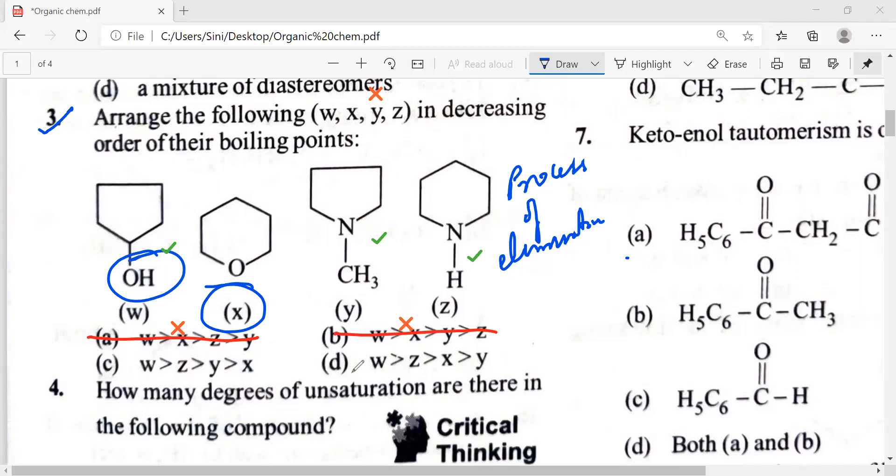So then comes our option c and option d. Option d is w greater than z greater than x greater than y. If I come to this, then we have to see the longer the chain also. So the longer the chain, then there should be less hydrogen bonding between them. So with this, we will get option d as the correct answer for this. So our option c is also eliminated in this.